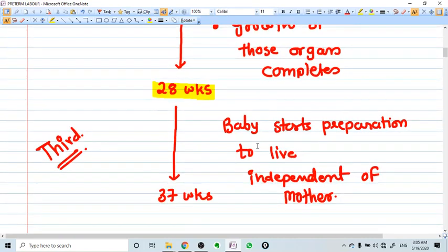From 28 weeks, the baby starts its preparation to live independent of the mother. In the third trimester, the baby grows itself and makes itself independent of the mother in these weeks.